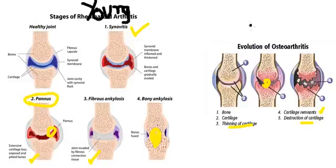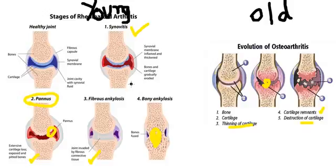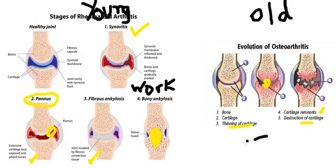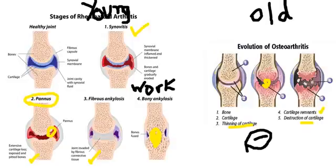Final review: rheumatoid arthritis affects young patients; morning stiffness improves with activity. Osteoarthritis affects elderly patients; pain increases with activity. Osteoarthritis is non-inflammatory, while rheumatoid arthritis is an inflammatory condition.